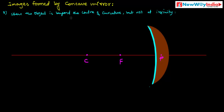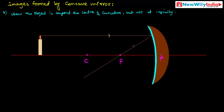When the object is beyond the center of curvature, that means beyond C but not at infinity, we draw the fundamental rays. One ray traveling parallel to the principal axis, after reflection, passes through the principal focus. Another fundamental ray passes through the center of curvature and, after reflection, retraces the same path. The image is formed at the intersecting point of these rays.